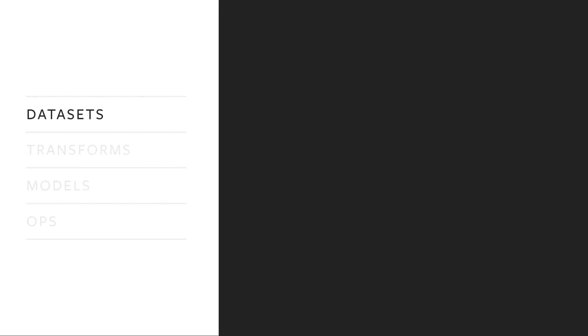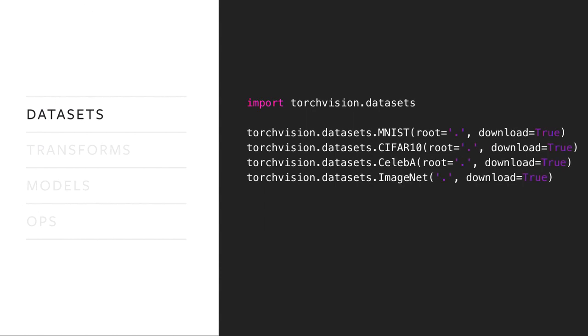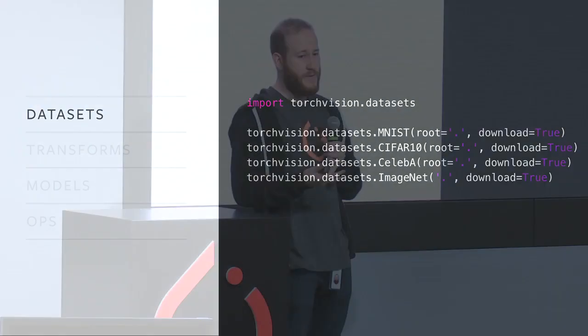For datasets, it's pretty much a one-liner. For the standard datasets, we can download them from the internet and put them somewhere, and then that's it. We have a number of assets available for not only image classification but also detection, segmentation, and now video — and that makes your life much easier when you just want to experiment on a standard task.